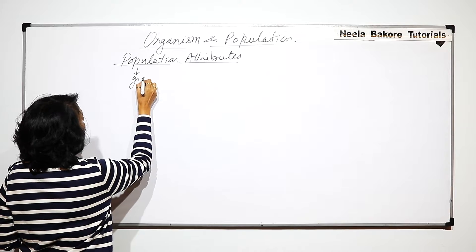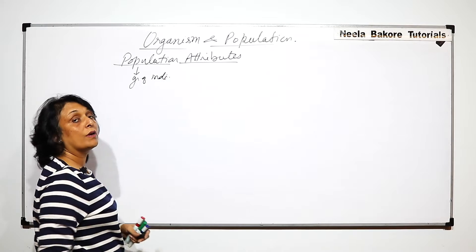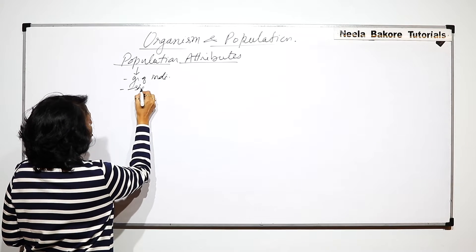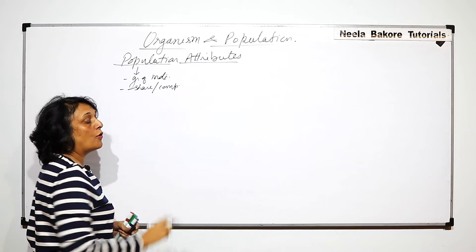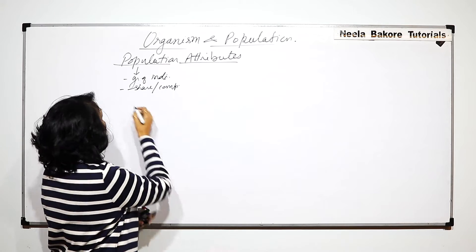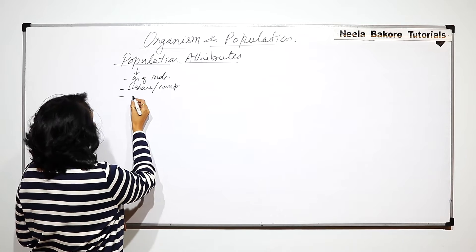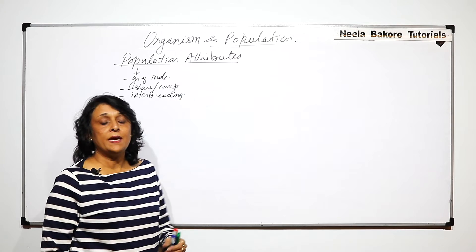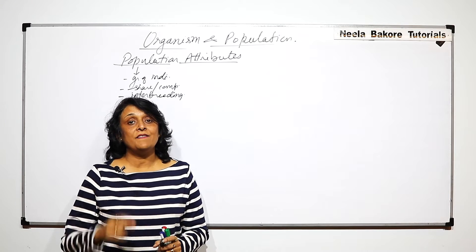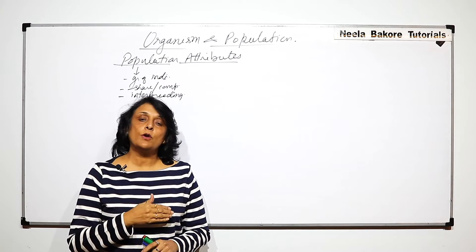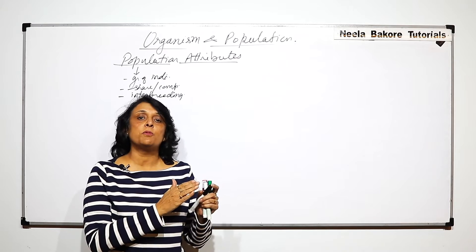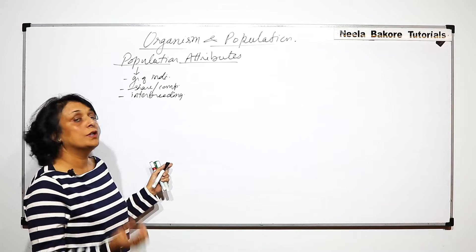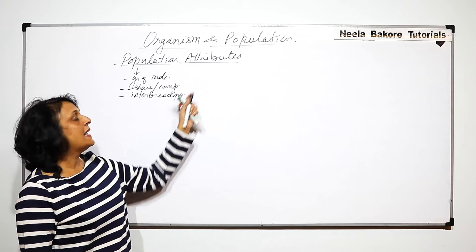Population is a group of individuals or organisms in a particular area, and these organisms either share or compete for the same resources. They reproduce naturally, meaning they are interbreeding. This interbreeding term is applicable only for reproductive-age organisms. If they are in the pre-reproductive age, this parameter does not apply to them. This group is what we call the population.